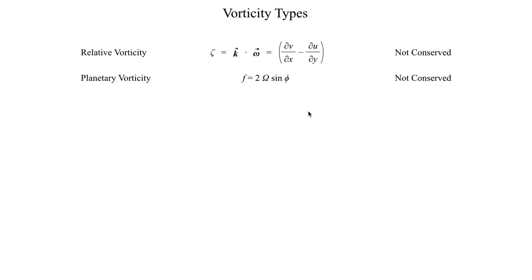And then another type of vorticity that we can work with is absolute vorticity, which is basically just the combined total of relative and planetary vorticity. And that's usually represented by this Greek letter eta. And this also is not a conserved quantity. So absolute vorticity is just adding these two quantities together.